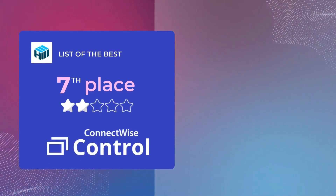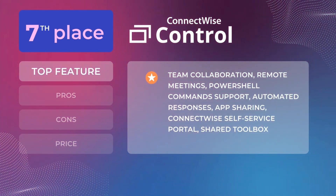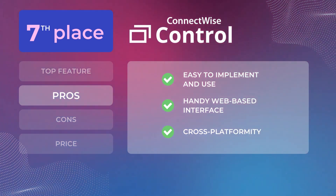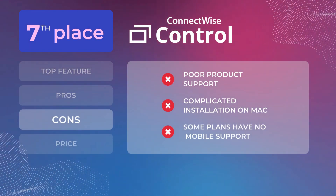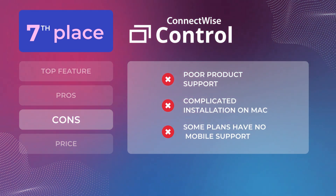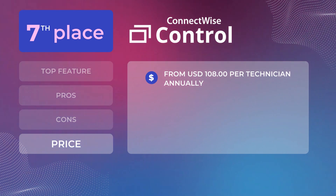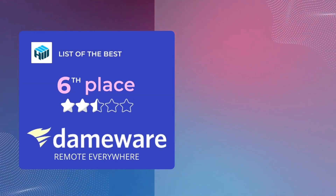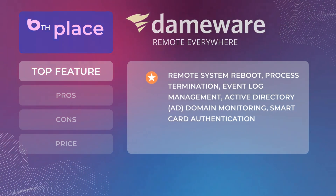Number seven in our list is ConnectWise Control. Here is more information about its top features, positives, negatives, and price. The sixth option is Remote Everywhere. You can see its main features and find more about its advantages, disadvantages, and price plans.